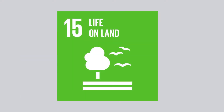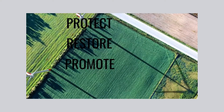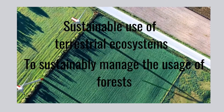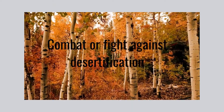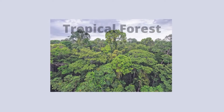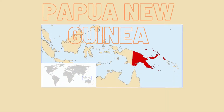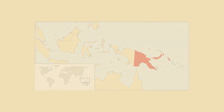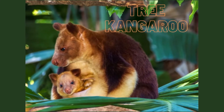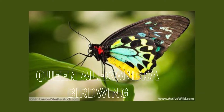Moving on, what is the United Nations Sustainable Development Goal 15? The goal is targeted to protect, restore, and promote sustainable use of terrestrial ecosystems, to sustainably manage the usage of forests, combat or fight against desertification, and halt and reverse land degradation and to prevent biodiversity loss altogether. From the coastal mangroves to the densely tropical forests, Papua New Guinea is home to some of the world's most unique flora and fauna, including tree kangaroos, leatherback turtles, and the Queen Alexandra birdwing butterfly.